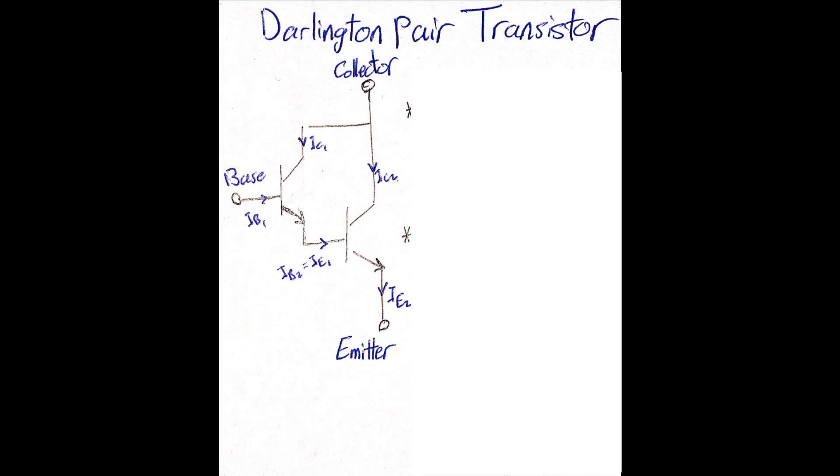First of all, we need to remember that the collector current is equal to beta times the base current, and the emitter current is the summation of the collector current and the base current. So overall, we see that the emitter current is nothing but the base current amplified.